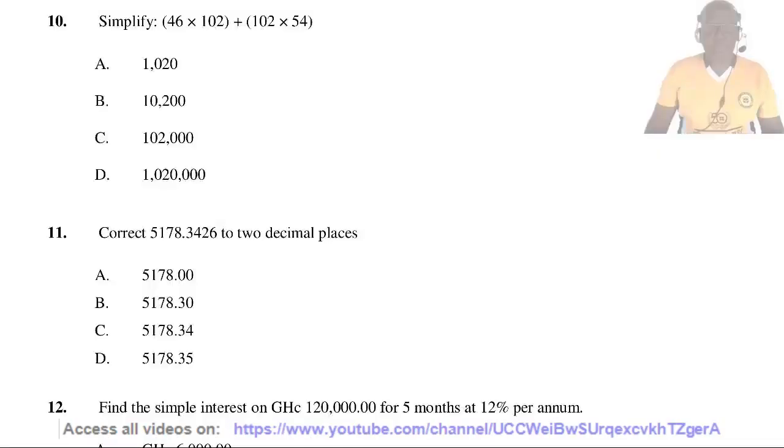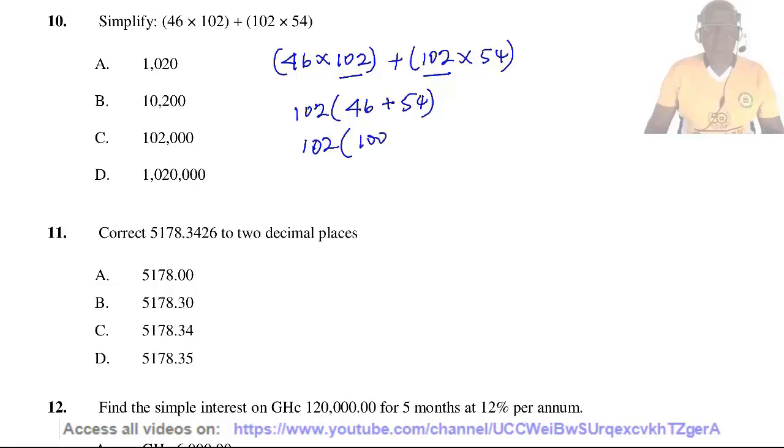Question 10. Simplify (46 × 102) + (102 × 54). Now 102 is a common factor, so we shall take away 102 and we shall have 46 plus 54, which gives us 100. So the answer is B, 10,200.